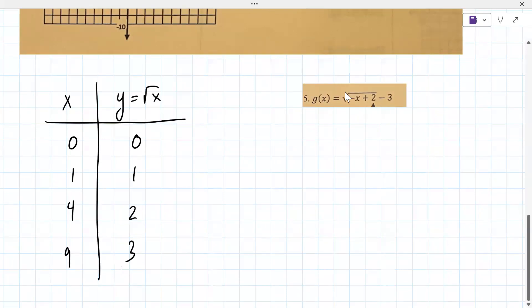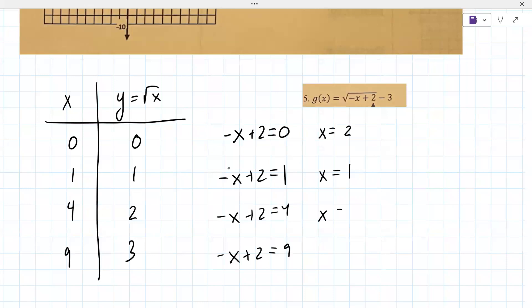What our goal here is, on these x values, you want these x values to be inside here. You're literally setting minus x plus 2 equal to 0, minus x plus 2 equal to 1, minus x plus 2 equal to 4, minus x plus 2 equal to 9. When you solve these equations, x equals 2, x equals 1, x equals negative 2, x equals negative 7, these are the new values that go in your table.